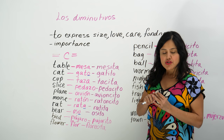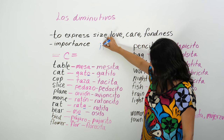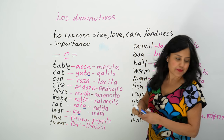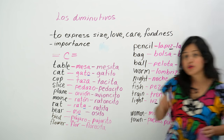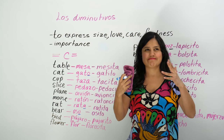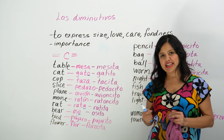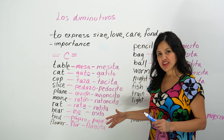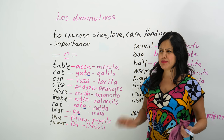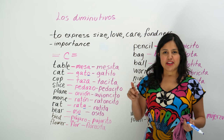For diminutivos, you're generally going to add -ito or -ita. Let's review it with words first, and then we'll write the rules — because if I give you the rule first, you might think it's easy, and it's not that easy. Let me show you with some words how you make a diminutivo and how you don't. You can pretty much make a diminutivo of everything.